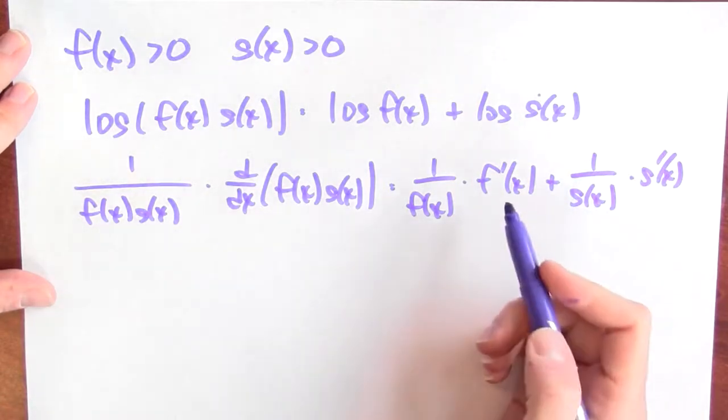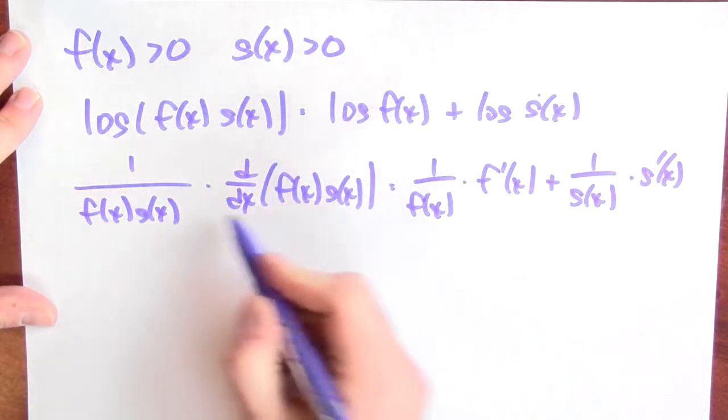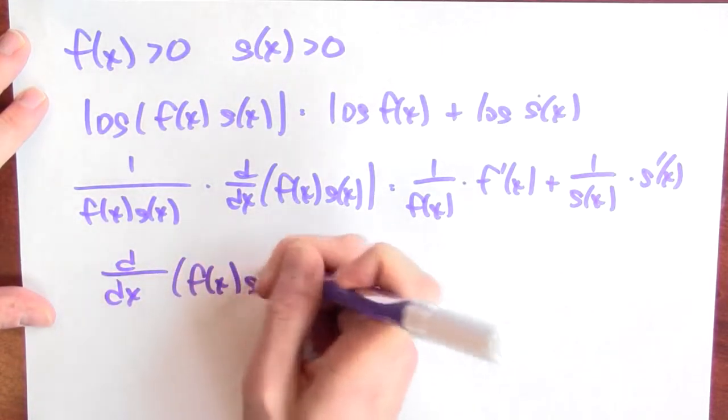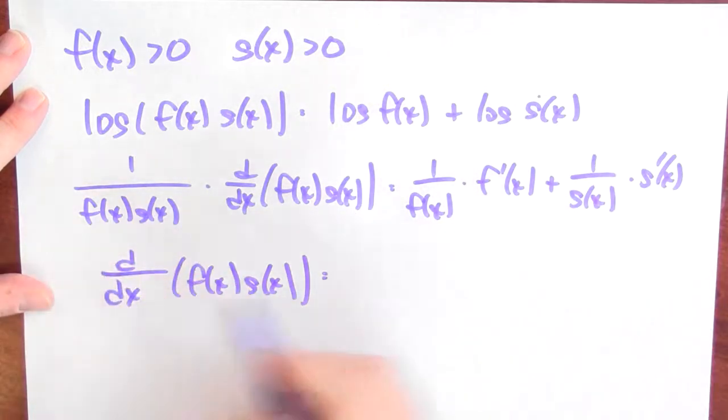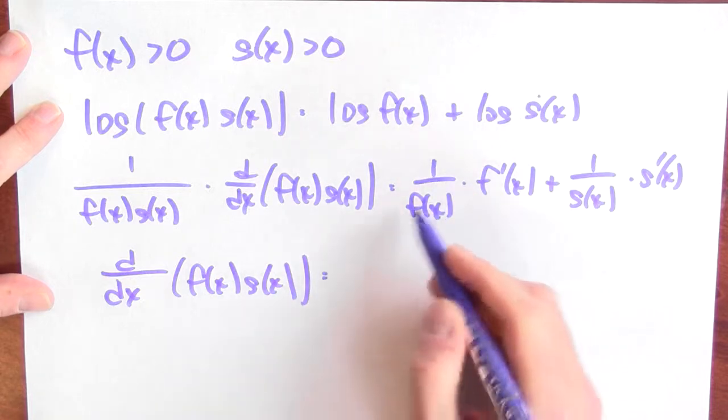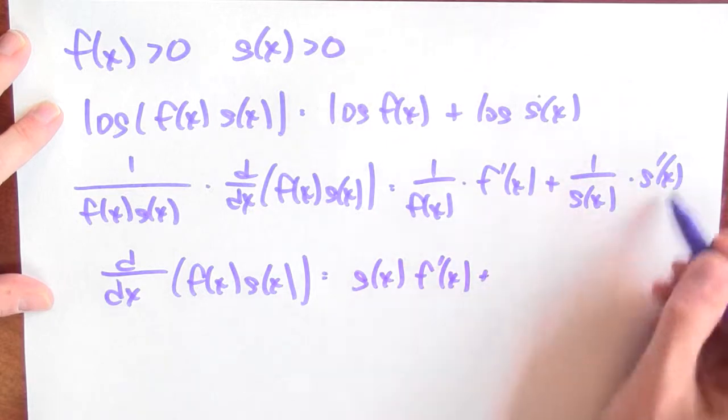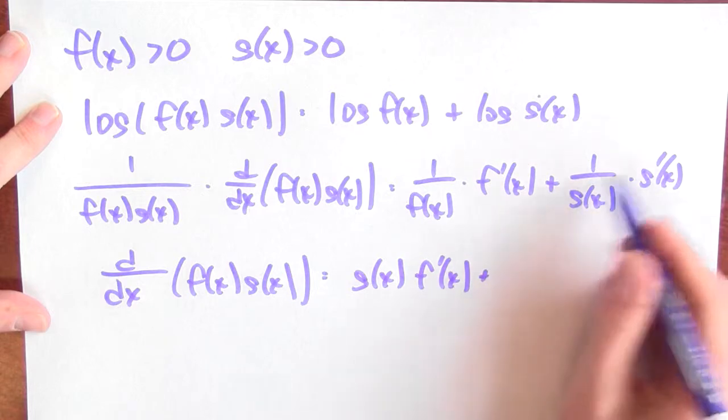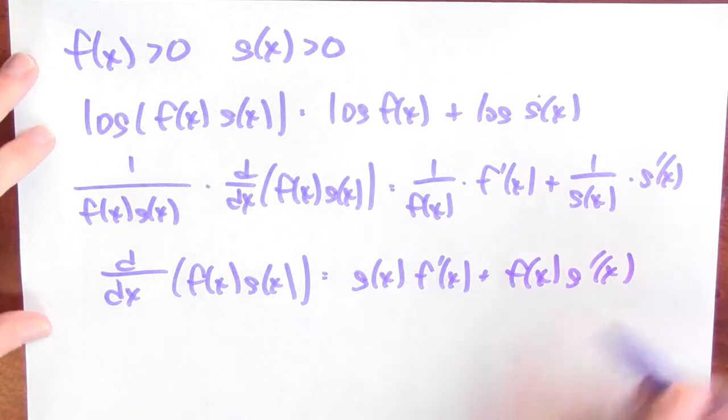Now, if I multiply both sides by f of x times g of x, what happens? If I multiply this side by f of x times g of x, I've then isolated the derivative of the product. So this is just the derivative of f of x times g of x. If I multiply this side by f of x times g of x, f of x times 1 over f of x is just 1. But I'm left with a factor of g of x times f prime of x plus. And if I multiply this term by f of x times g of x, g of x times 1 over g of x is just 1. But I'm left with an f of x. So f of x times g prime of x.